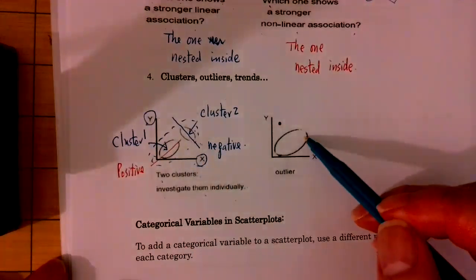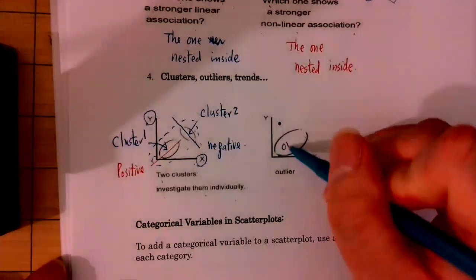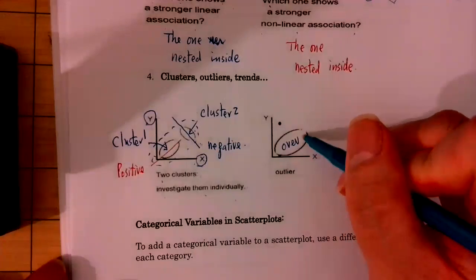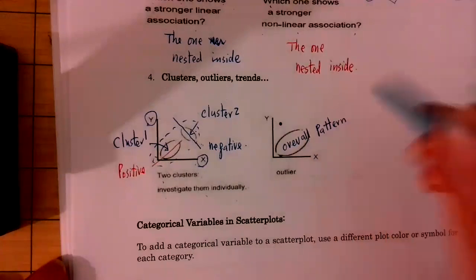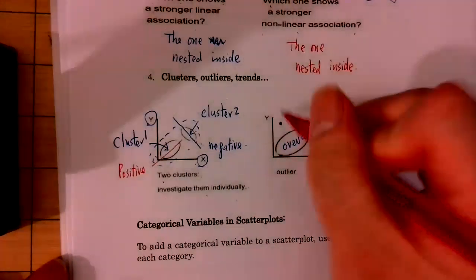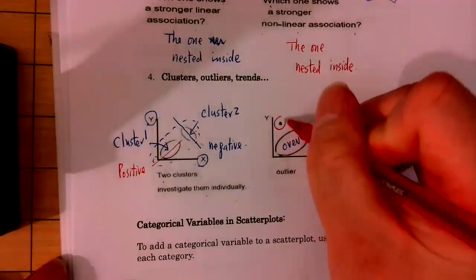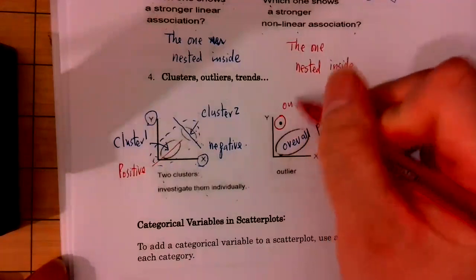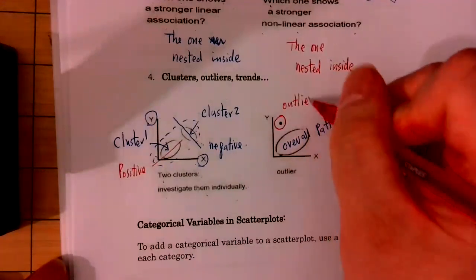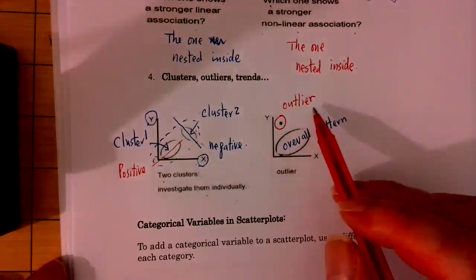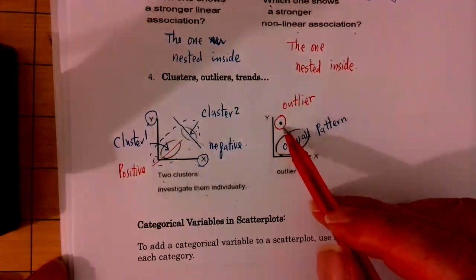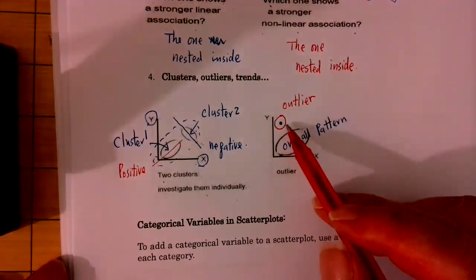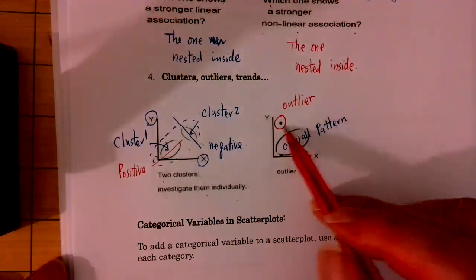This picture — if I call this the overall pattern, then this one is outside the overall pattern. We call it an outlier. When we see an outlier, what should we do? We should find out the reason why they appear. Don't just believe them.